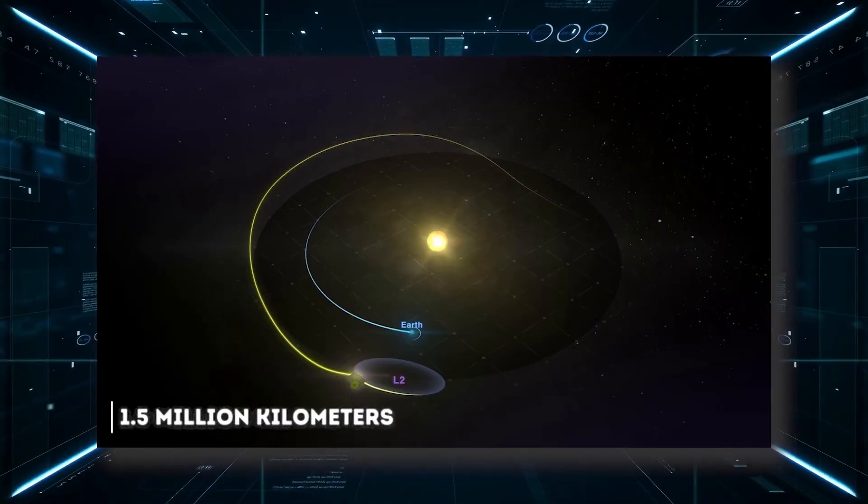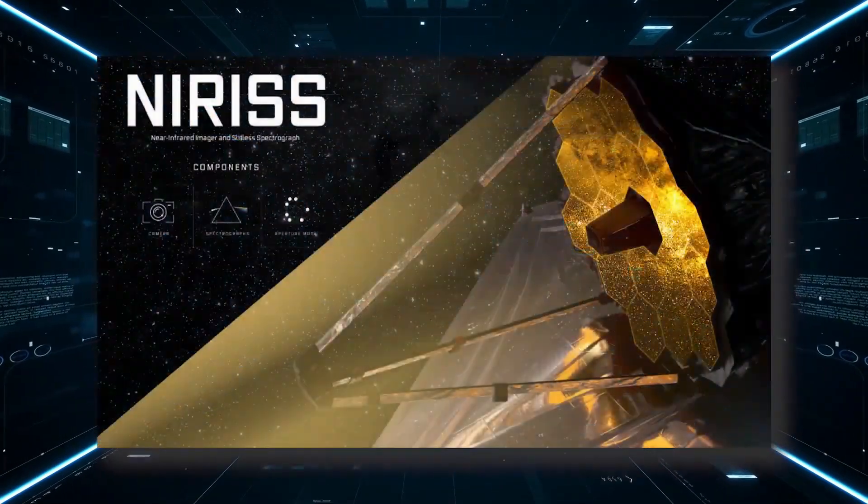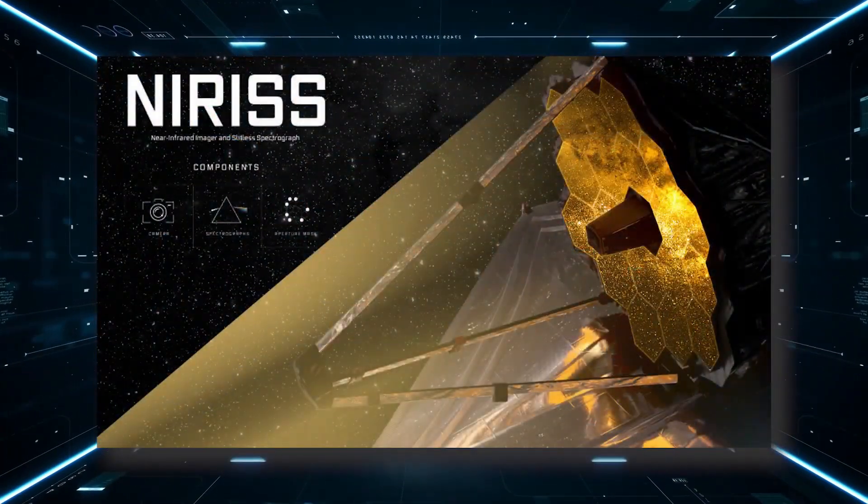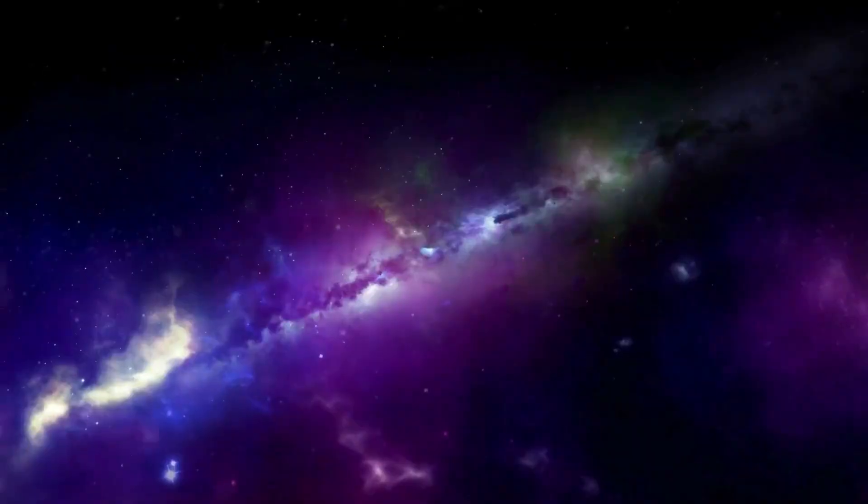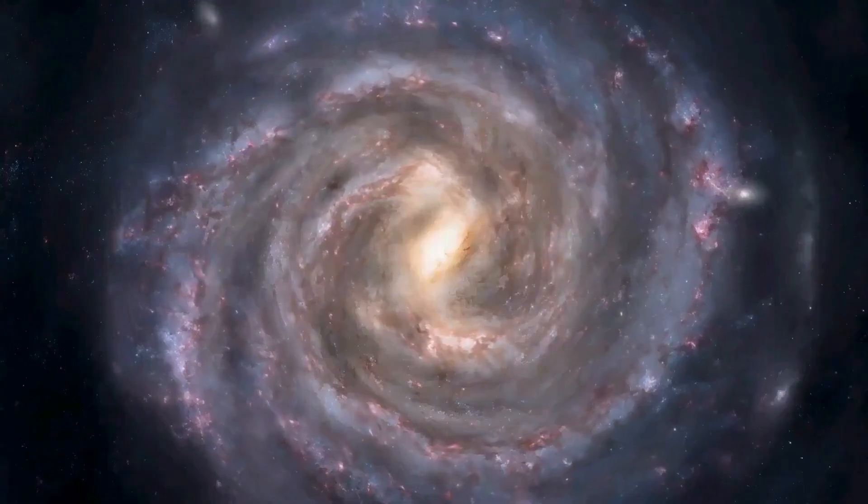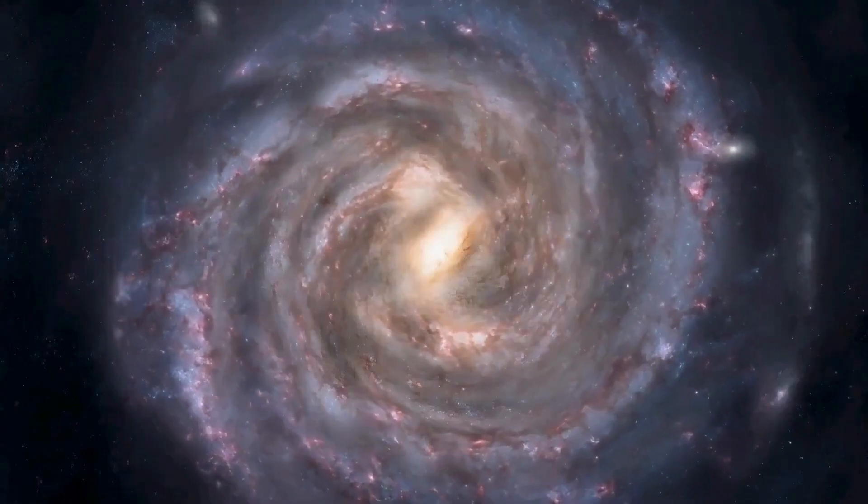The James Webb telescope has succeeded in finding signs of water on an exoplanet called WASP-96b. The spectrum of the exoplanet's atmosphere has been analyzed in detail by the telescope, revealing the presence of water, haze, and clouds that had not been detected before.